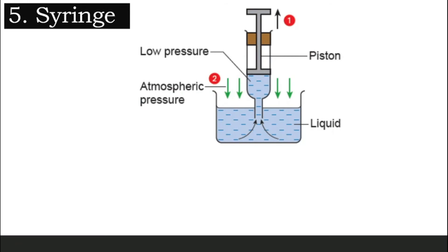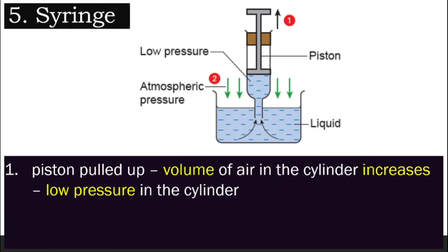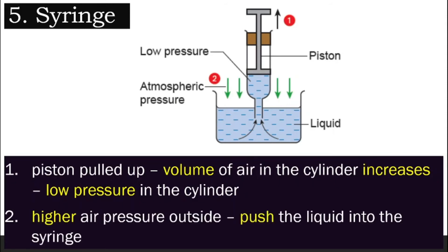Example number five, syringe. How does the syringe work? That is a piston that the nurse will pull up when the nurse is getting ready to give you an injection. So when you pull the piston out, what happens is you create a space here. The room here, the space here becomes bigger. So when the volume increases, the pressure decreases. So you create a low pressure inside and high pressure outside.